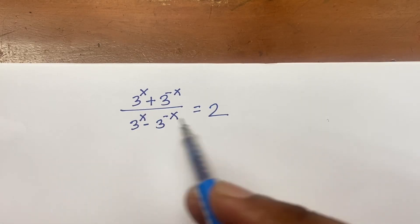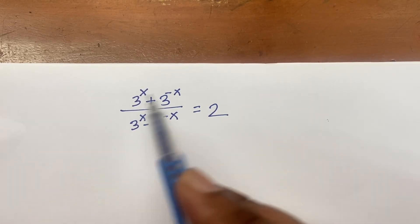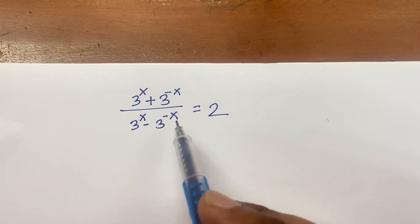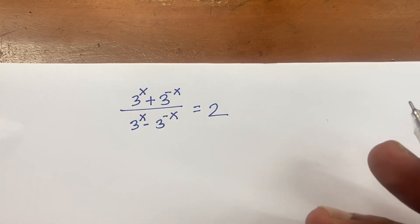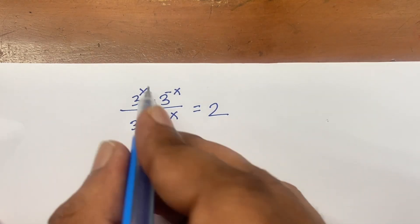How to solve: 3 power x plus 3 power minus x, over 3 power x minus 3 power minus x, is equal to 2. Find the value of x.